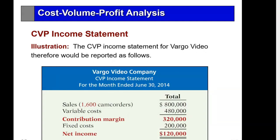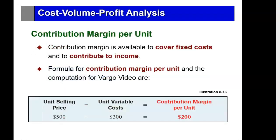The CVP income statement — cost, volume, profit — shows sales of $800,000 on 1,600 camcorders with variable costs of $480,000. If there's a 10% increase in sales, there would be a 10% increase in variable costs and a 10% increase in the contribution margin. The contribution margin is available to cover fixed costs. In this case, the contribution margin of $320,000 is $120,000 more than needed to cover fixed costs, so net income is $120,000. The contribution margin per unit is the unit selling price of $500 minus the unit variable cost of $300, giving a contribution margin per unit of $200.